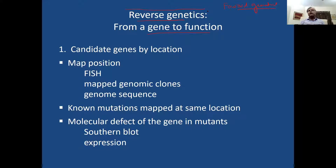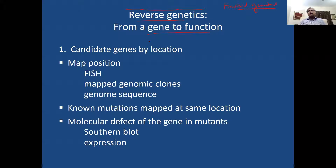Forward genetics is more like finding a needle in a haystack. We go through random mutagenesis, and then each gene in the whole genome is a candidate gene. From phenotype, we go and try to map the gene. But in contrast, in reverse genetics we have a candidate gene.